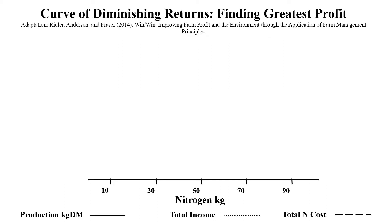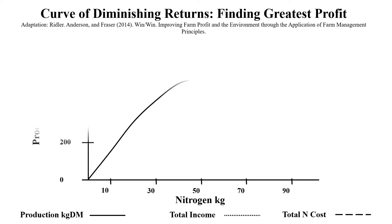So to demonstrate the relationships between profit, production and pollution, this chart uses the work of Barry Ridler and his farm analysis program E2M. The example uses diminishing returns for nitrogen use on a bull beef operation, and this is how we construct that.